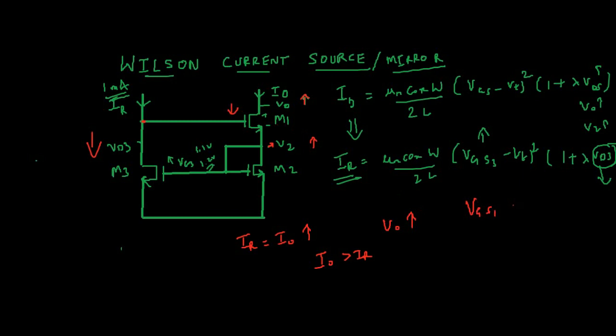Refer to this current equation: if V_GS decreases the current decreases. Earlier current was increased due to increase in VO.